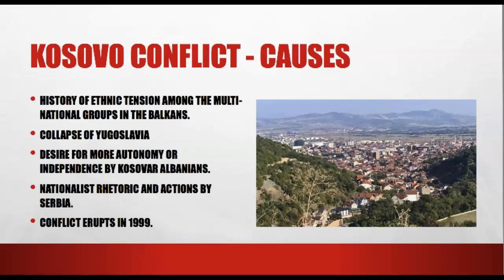As I review the causes of the Kosovo conflict, a few things stand out. This area has a history of ethnic tension among the multinational groups that live in the Balkans, and in terms of the Kosovo conflict we're really looking at the tension between Serbs and Albanians. Contributing to this conflict besides the history of tension, the collapse of Yugoslavia gives that catalyst — in the early 1990s there were some conflicts that flared up, subsided, but then by the end of the 1990s the conflict flared up again. The desire for more autonomy or independence by Kosovo Albanians, and then the nationalist rhetoric and actions by Serbia and more specifically their president Slobodan Milosevic, led to the conflict flaring up in 1999.